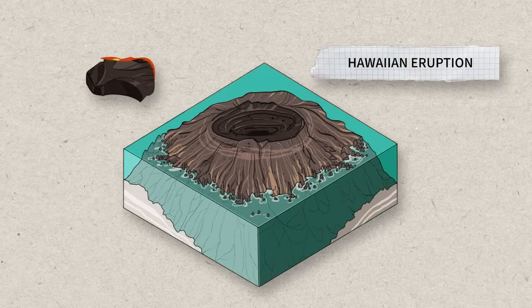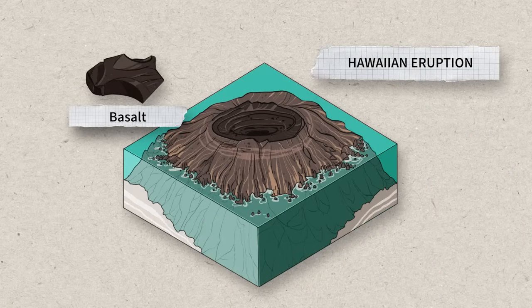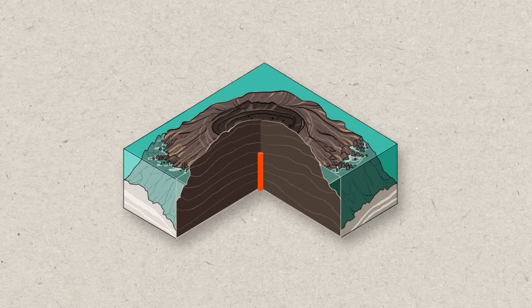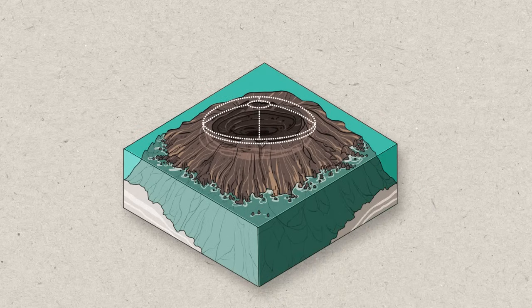If the magma is rich in basalt, it is very fluid. It rises easily in the volcano and spouts out in fountains of lava. The lava flows for long distances. As it solidifies, it becomes a volcano with a gentle slope known as a shield volcano.